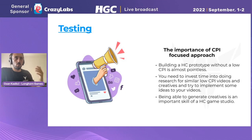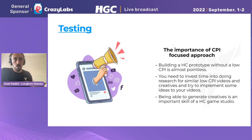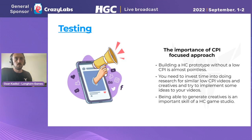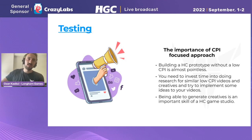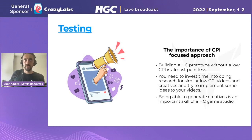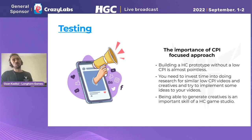Now let's say we're at the testing phase and need to start testing our prototype. CPI plays a key role — without a good CPI, developing a game is almost pointless because nobody is going to play your hyper casual game. You need to invest time into researching similar games' CPI videos and creatives, try to understand why they worked and why they achieved low CPIs, and then try to implement those same ideas into your own videos.